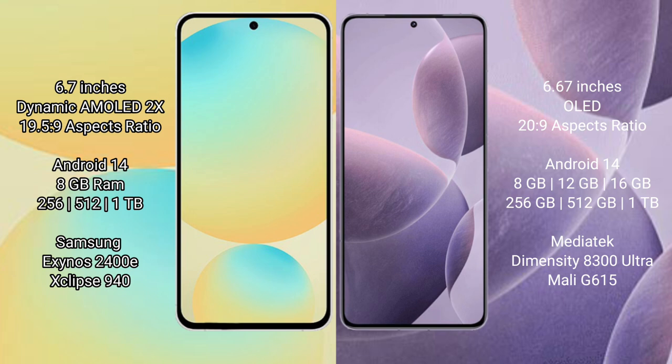Samsung Galaxy S24 FE has a 6.7 inch dynamic AMOLED display with a 20:9 aspect ratio. Redmi K70E has a 6.8 inch dynamic AMOLED display with a 20:9 aspect ratio. Samsung Galaxy S24 FE comes with 8GB RAM and 256GB or 512GB storage, with 12GB RAM variants also available.